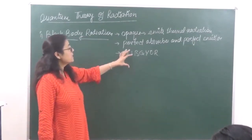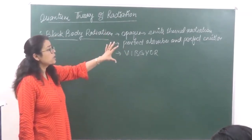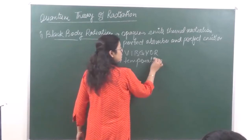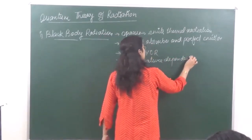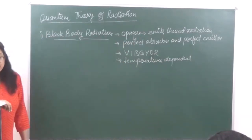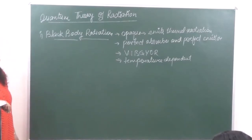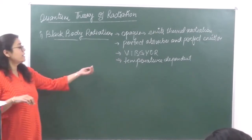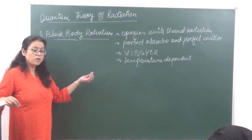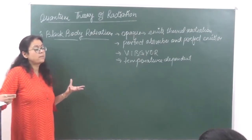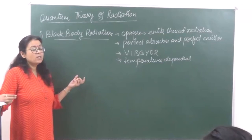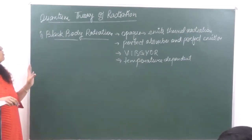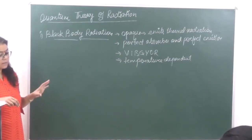Black body radiation is totally temperature dependent. If we keep increasing the temperature and consider the wave theory, then according to the electromagnetic spectrum, the radiation emitted should come below the violet region into the UV region — which really does not happen. So here, the electromagnetic wave theory was given a question mark. Black body radiation was not explained on the basis of electromagnetic theory.